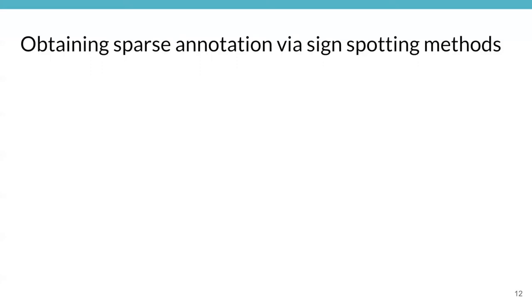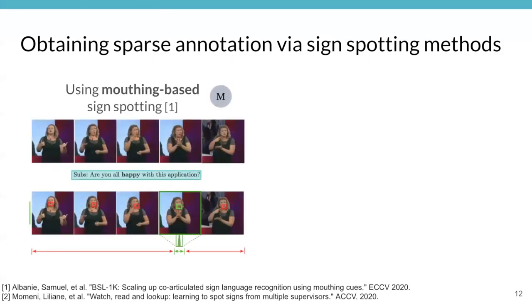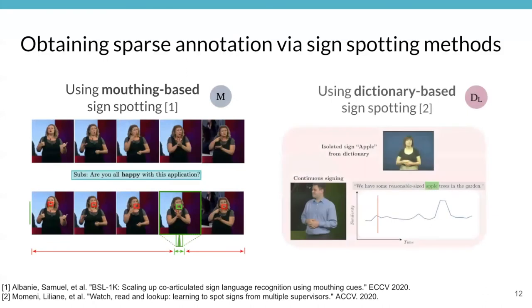We start by obtaining a first set of sparse annotations using two previous sign spotting techniques based on mouthing and dictionary examples. Both works are listed in the bottom of this slide.